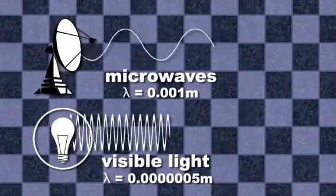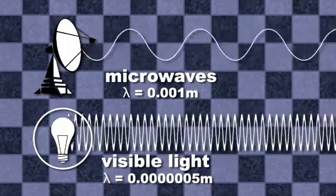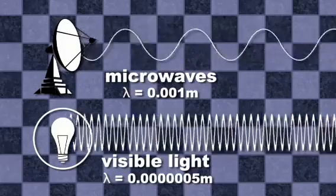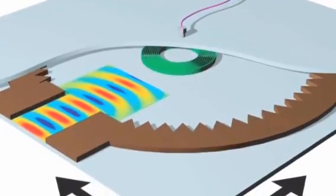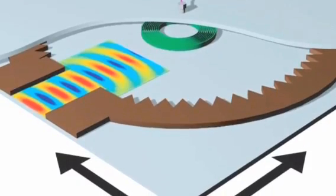But skeptics pointed out that visible light is on a scale 1,000 times smaller than microwaves and interacts differently with various materials. Also, the microwave device is designed to work in just two dimensions, like on a tabletop. So there is still work to be done.